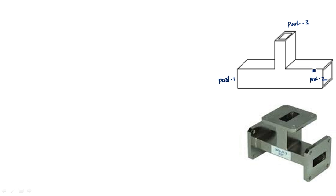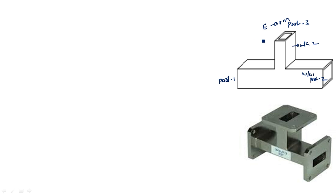Port 1 and port 2 are opposite to each other and they belong to the same waveguide. A junction is nothing but a combination of two or more waveguides. Here two waveguides are there — the first waveguide is having two ports 1 and 2, and the second waveguide is having port 3, which is connected at the broader side of this main waveguide. This particular port 3 is known as the E-arm.